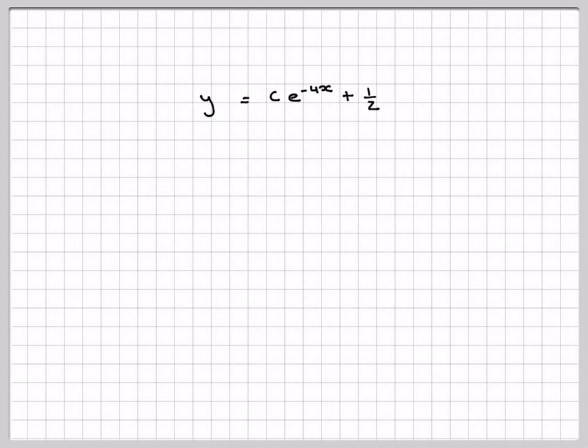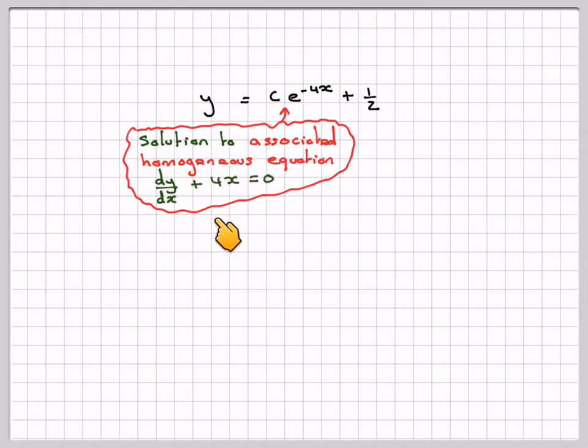Looking at this particular solution, the first bit here is the solution to the associated homogeneous equation, dy by dx plus 4x is equal to 0. This is known as the complementary function. Sometimes we use CF for that.